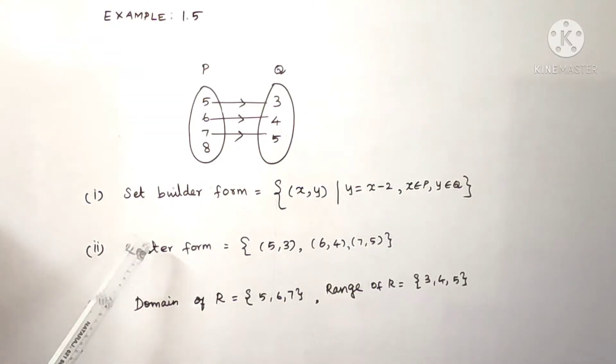Next thing, roster form. The relation elements, every map: (5,3), (6,4), (7,5). This is the relation in roster form.